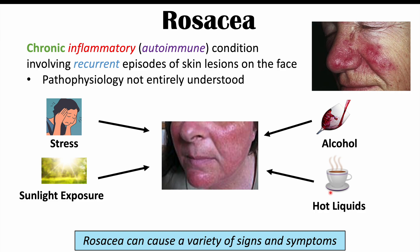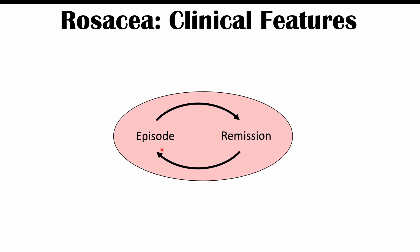Rosacea can cause a variety of signs and symptoms, and we're going to talk about those as we go through this lesson. The signs and symptoms of rosacea occur as recurrent episodes — flare-ups of skin lesions — and the episode will then go into remission, either spontaneously or due to treatment. Then a trigger can lead to another exacerbation or flare-up of symptoms, creating a recurrent cyclical pattern.